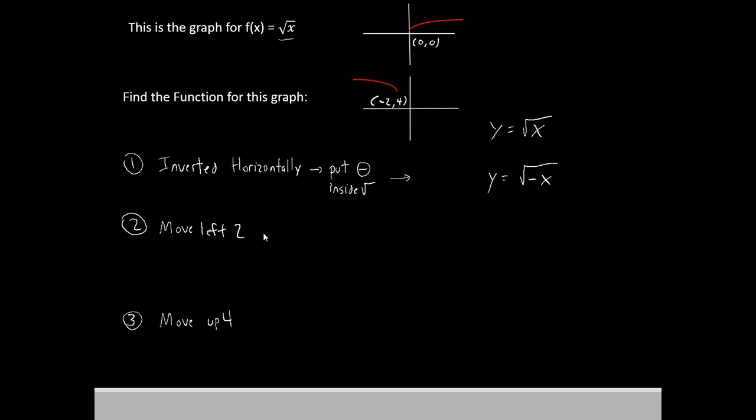Now we do another operation. Move it to the left 2. Now if we want to move left or right, we put a number inside the root. Also remember that we said if you'd like to move left, you put a positive sign on whatever number you're adding inside of the root. And if you want to move right, you put a negative number on whatever you're putting inside of the root.